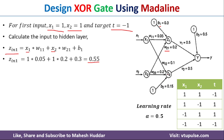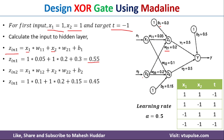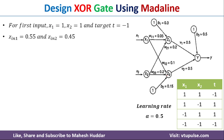Similarly, we calculate the net input at Z2: Z2_in = X1·W12 + X2·W22 + B2. Substituting all known values into this equation, we get Z2_in.